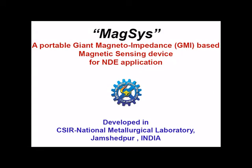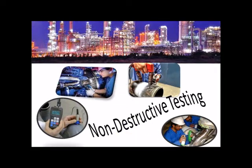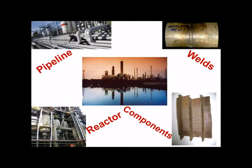CSIR National Metallurgical Laboratory at Jamshedpur, India developed a portable giant magneto-impedance based sensing device, Magzis, for NDE application. In thermal power plants and petrochemical industries, sensors and transducers are employed in structural health monitoring of pipeline welds and reactor components for their successful operation.